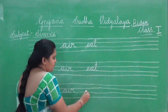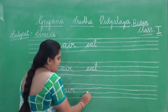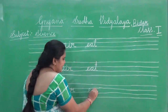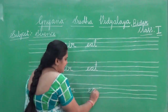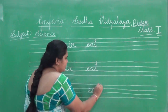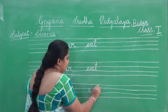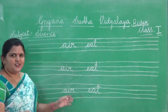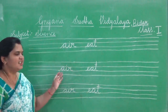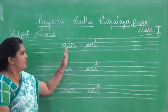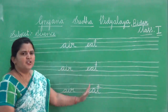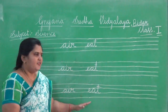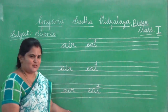So again I am going to write it. First letter is E, second A, and third letter is T. E, A, T. Eat. So we are going to go to the third word. This one also you are going to write it five times in your classwork.